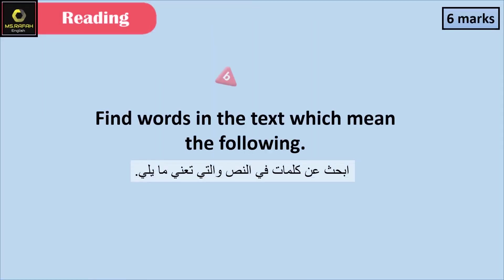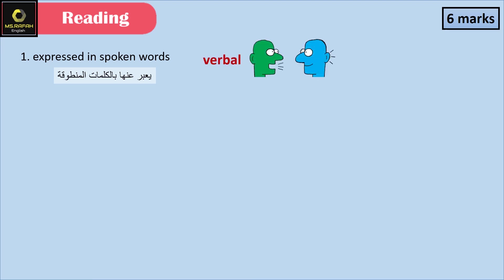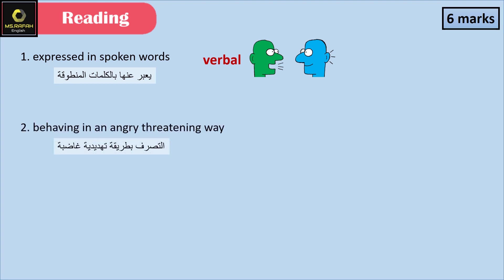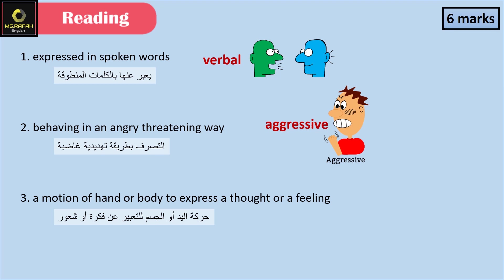Question B. Find words in the text which mean the following. 'Expressed in spoken words' — verbal. 'Behaving in an angry, threatening way' — aggressive. 'A movement of hand or body to express a thought or a feeling' — gesture.